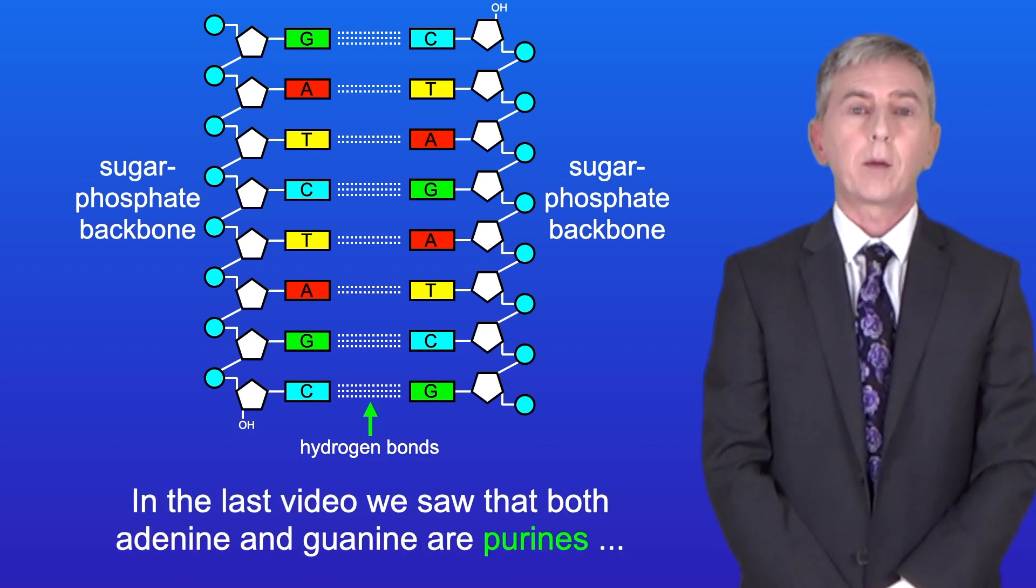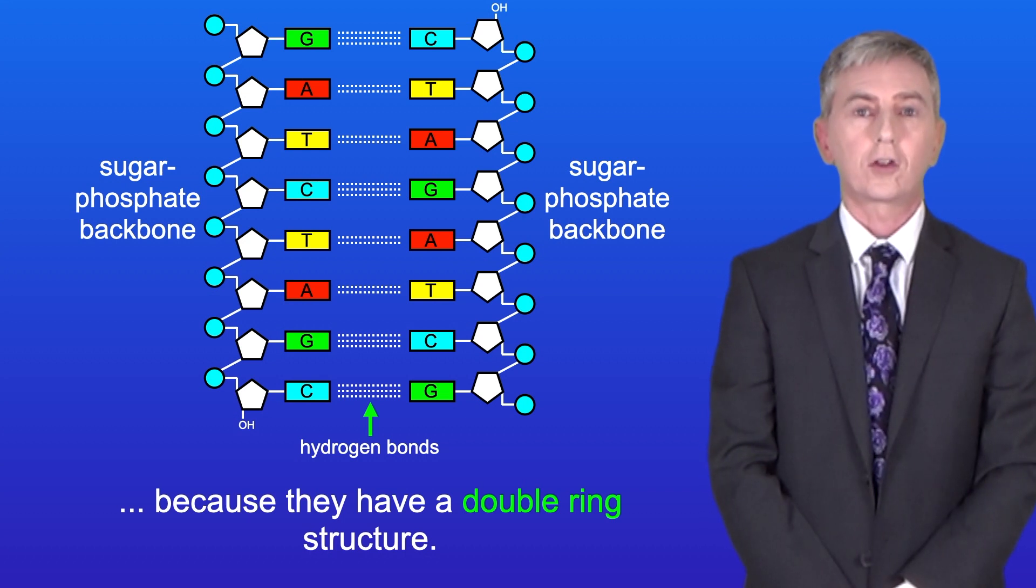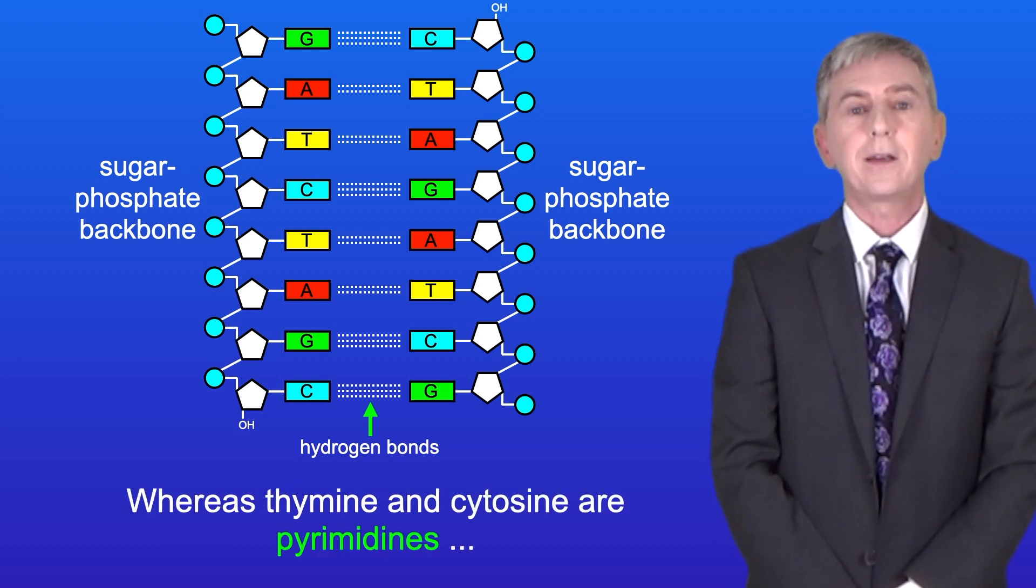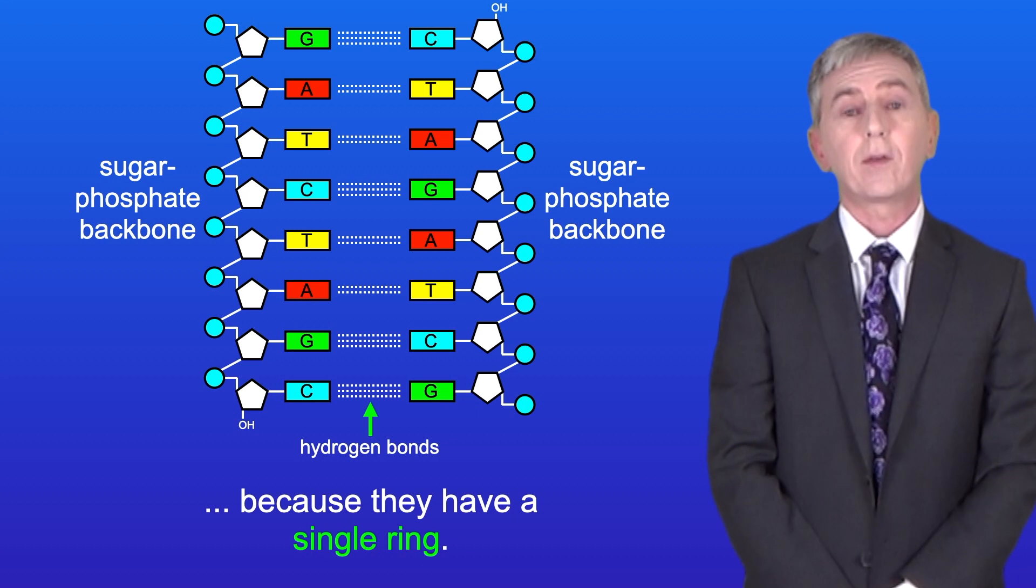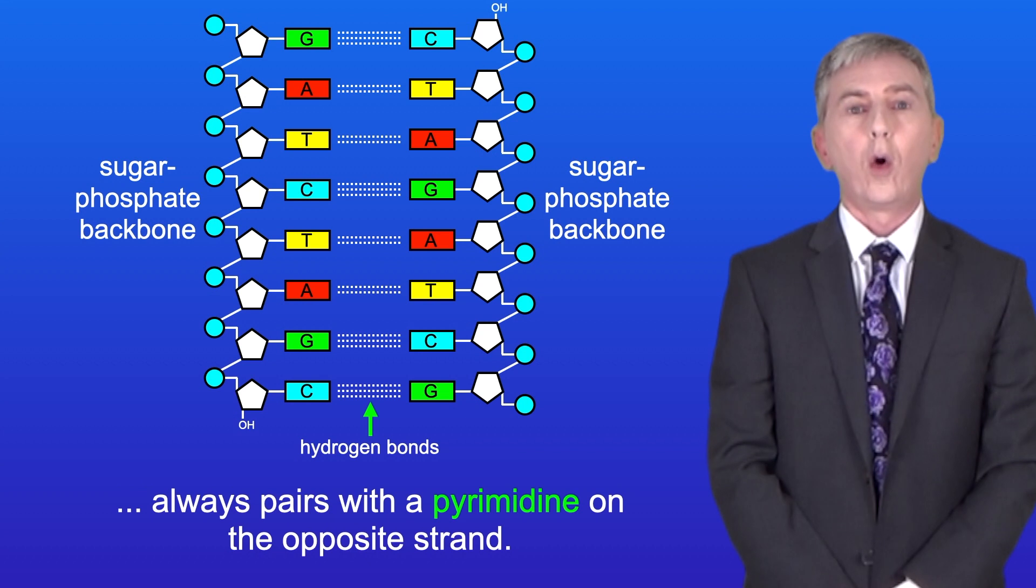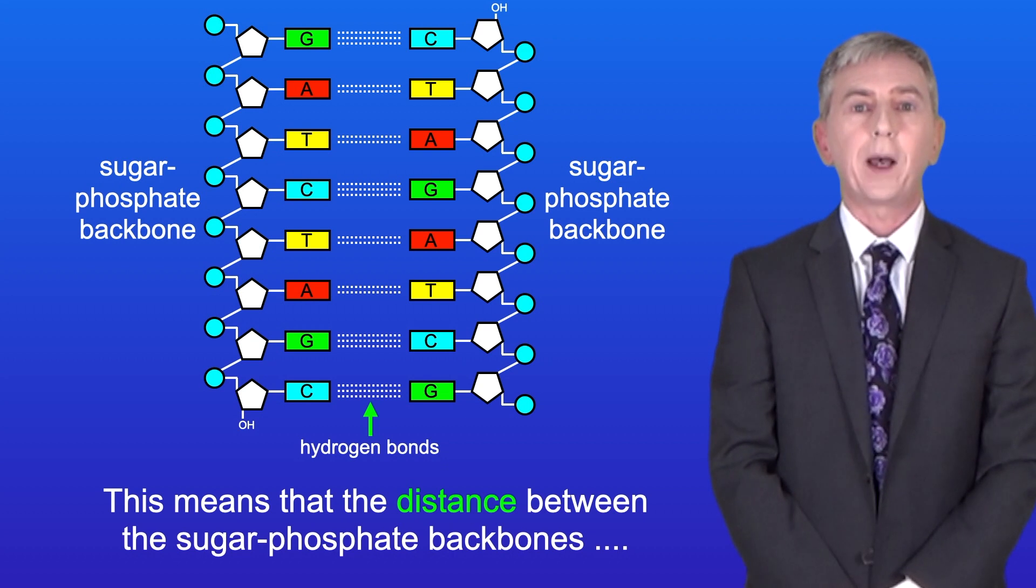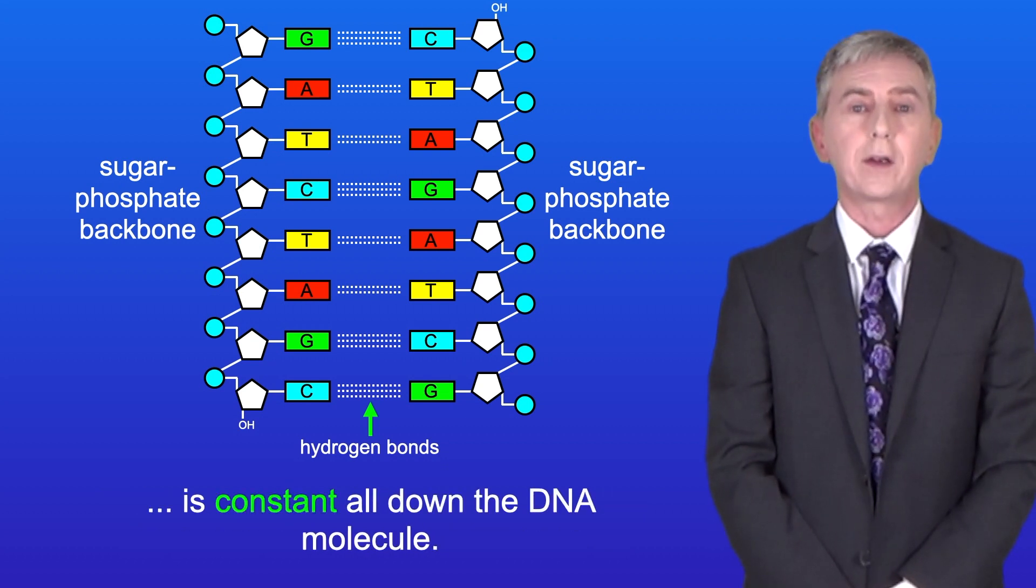In the last video we saw that both adenine and guanine are purines because they've got a double ring structure whereas thymine and cytosine are pyrimidines because they have a single ring. So what this means is that a purine on one strand always pairs with a pyrimidine on the opposite strand and this means that the distance between the sugar phosphate backbones is constant all down the DNA molecule.